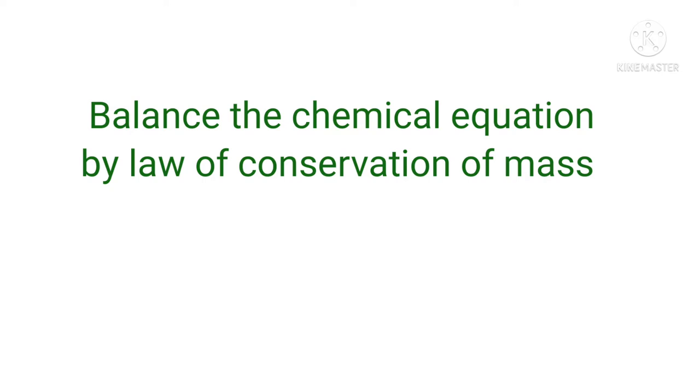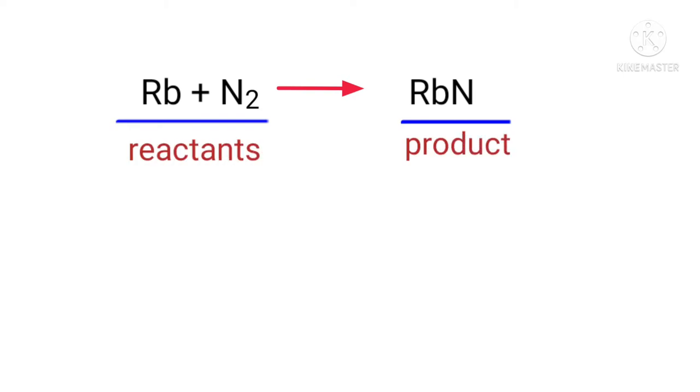Balance the chemical equation by law of conservation of mass. Rubidium plus nitrogen gives us rubidium nitride. In this equation, the reactants are rubidium and nitrogen, and the product is rubidium nitride.